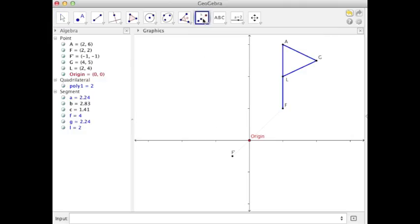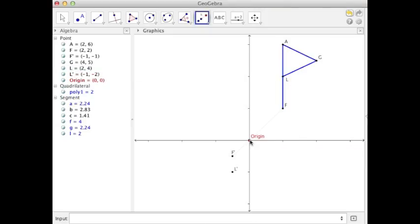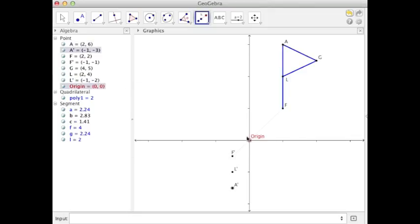Change the line thickness and maybe make them dotted lines. So continuing, I've got point L, dilated through the origin with a scale factor of negative 1 half, A, and G.